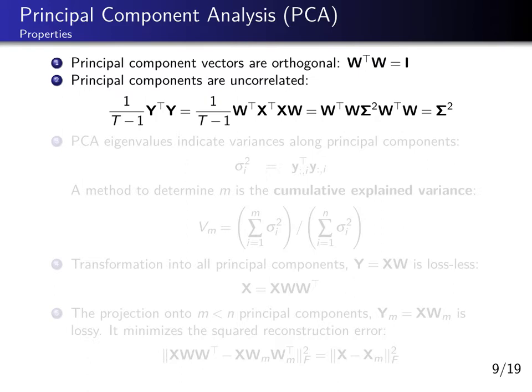We notice we have two occurrences of W transposed W, which is the identity matrix as established in property one. We can eliminate these, leaving only the eigenvalue matrix sigma squared — a diagonal matrix with eigenvalues on the diagonal. Each eigenvalue is little sigma squared, representing a variance. We have shown that the covariance matrix of principal components is diagonal, so principal components are pairwise uncorrelated.